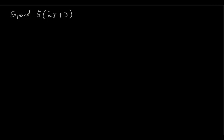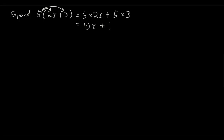So let's do a quick revision on expanding. We have 5 times (2x + 3) — the term at the front multiplied by each term on the inside: 5 times 2x plus 5 times 3, so we have 10x plus 15.